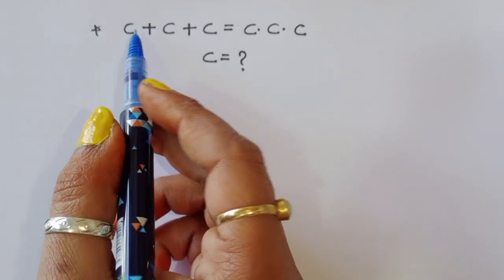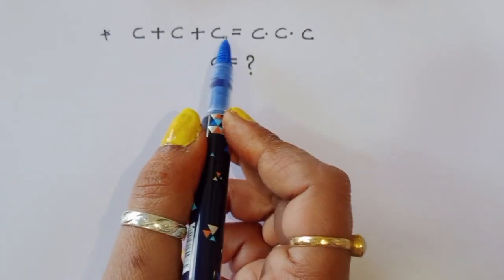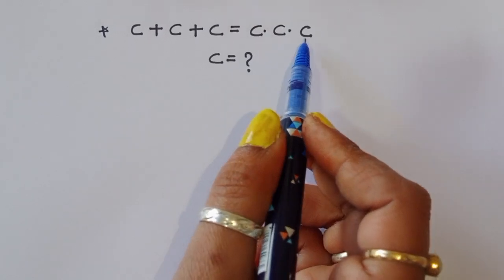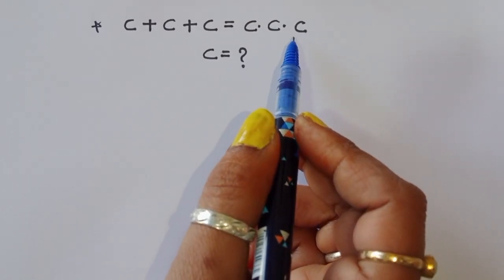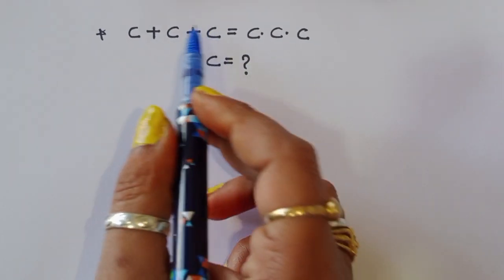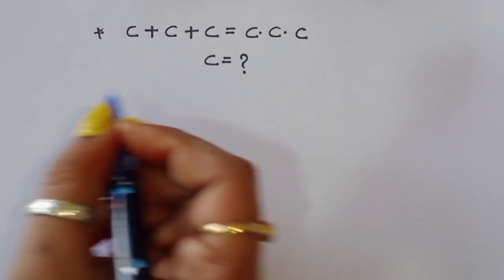The question is: c plus c plus c is equal to c times c times c. We have to find out the value of c. Let's see the solution.